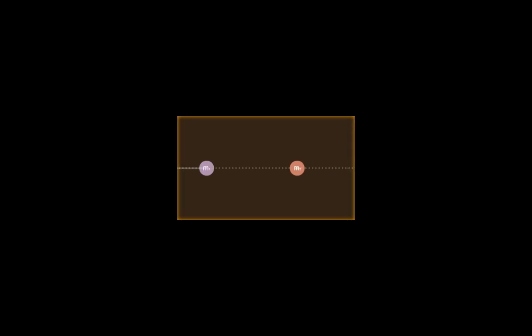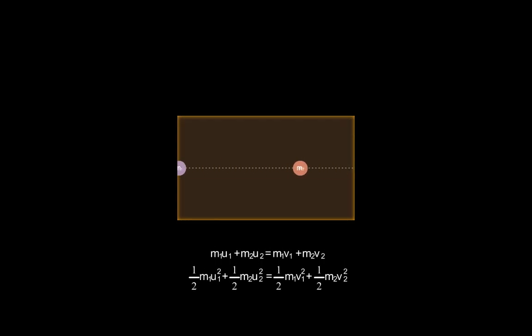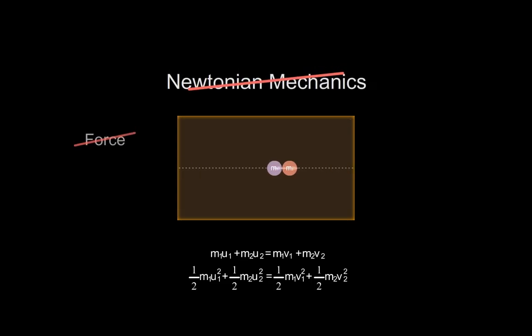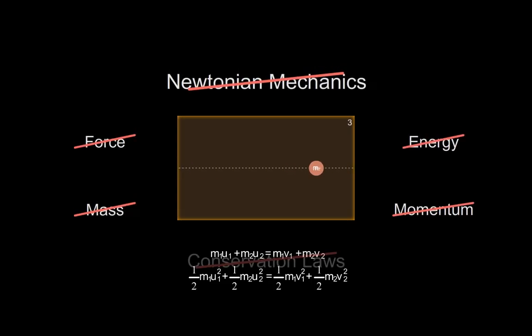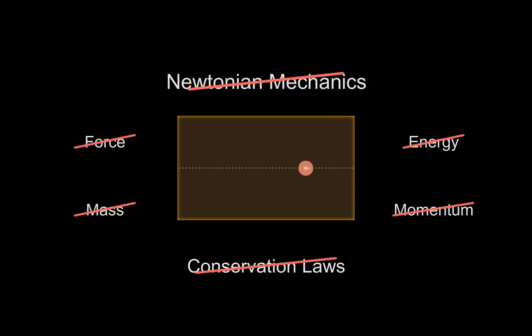This is perhaps the first system we study after being introduced to Newtonian mechanics: elastic collision of two particles in one dimension. As you probably know, we typically resolve it using energy and momentum conservation. But what if it could be resolved just from symmetries without ever invoking Newtonian mechanics, force, mass, energy, momentum, conservation laws, and everything that follows from them? As we'll see in the video, the concept of mass can fall out of the equations based on symmetry principles without ever being postulated.